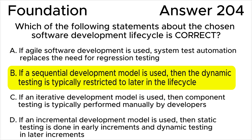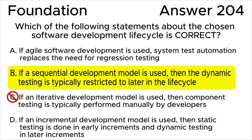Answer C is not correct. If an iterative development model like agile is used, then component tests may well be used for regression testing for each iteration. In that case, there is a strong argument for automating these component tests, which will have to be run frequently.